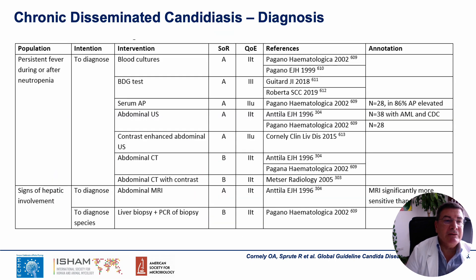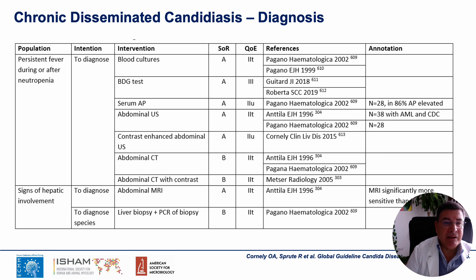Regarding diagnosis, as you can see, blood culture, beta-glucan, alkaline phosphatase, ultrasound, and also MRI favor a correct suspicion in the diagnosis of this complication. On the contrary, CT scan is less relevant, and liver biopsy, as I mentioned before, can also help us arrive at the diagnosis.